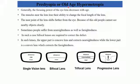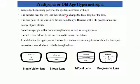The focusing power of the eye lens decreases with age. The muscles near the lens lose their ability to change the focal length, so the ciliary muscles become weak and lose their ability to bring about changes in focal length through sufficient contraction and relaxation. As a result, the near point of the eye shifts farther away, and old people cannot see nearby objects clearly.